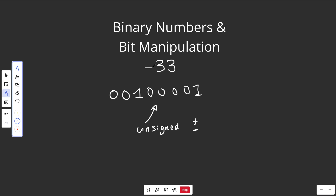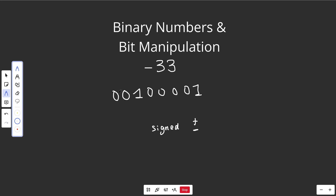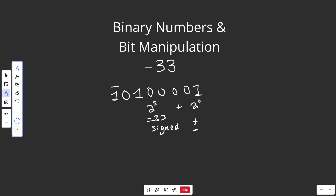Of course you would want to allow negative numbers. To do that, we use what are called signed integers, which means the first digit is actually going to represent the sign of the number. If it is a 0, that means it is positive. If it is a 1, then it is going to be negative. So this would be negative 33 — it's still 1 times 2 to the 0 plus 1 times 2 to the 5, which is 33, but it's negative 33. Generally in computer science we do need negative numbers, so we're mostly going to stick with signed numbers.